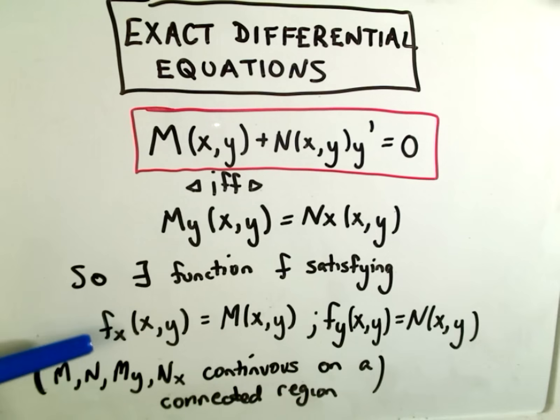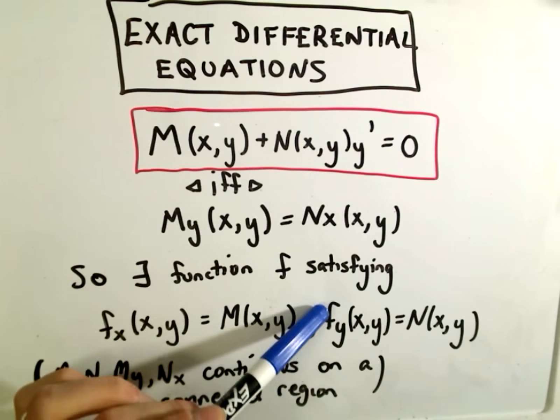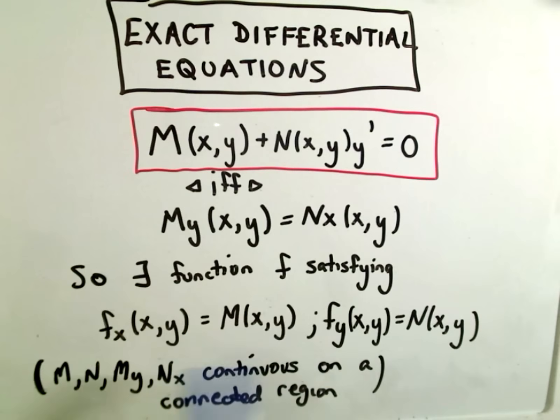And it says basically what you can do is you can find a function whose derivative with respect to x is the M part, derivative with respect to y is the N part, and then we use that function to come up with a solution.